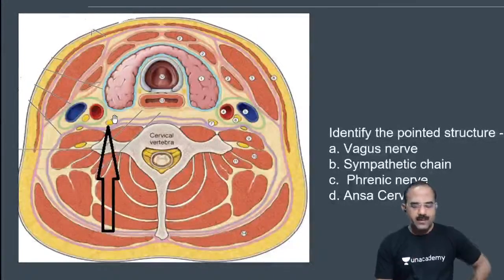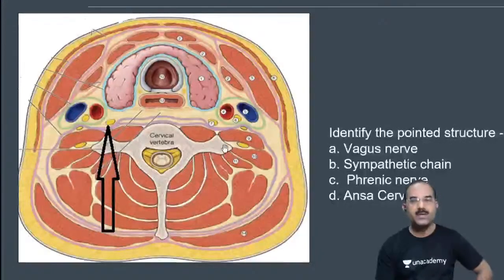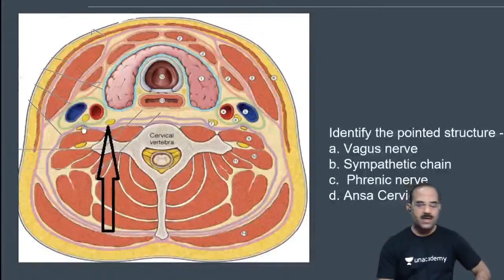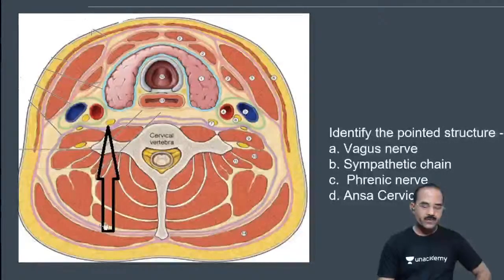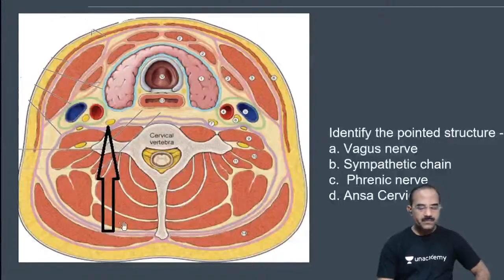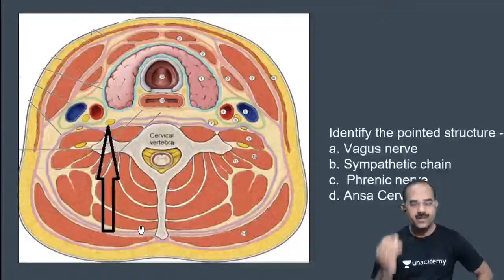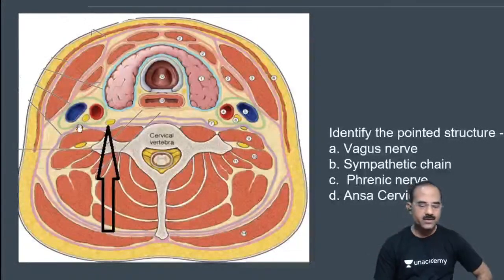This group of muscles — these are the pre-vertebral muscles. And what is this fascia which is going to cover the pre-vertebral muscles? This is the pre-vertebral fascia.